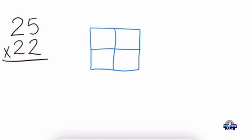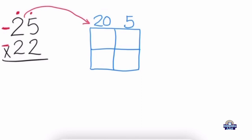Here we have the four parts. The first thing we're going to focus on is each of the numbers — we're going to focus on 25, then on 22. We expand 25 and put it on the top. So we expand the 2 in 25, which is going to be 20, then we expand the 5, which remains the same as 5. We're finished expanding 25 and put it at the top.